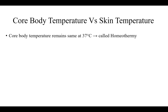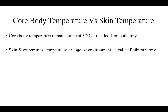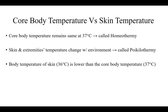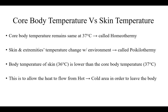Core body temperature versus skin temperature. Core body temperature remains the same at 37 degrees centigrade, which is called homeothermy. Skin and extremities temperature change with the environment — this is called poikilothermy. Poikilo means changing. Body temperature of the skin is slightly lower than the core body temperature, to allow heat to flow from hot to cold area in order to leave the body.